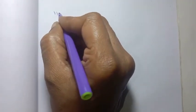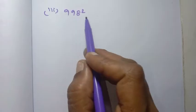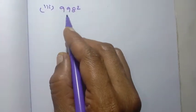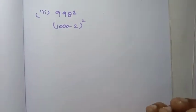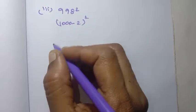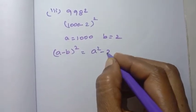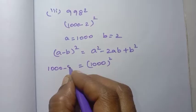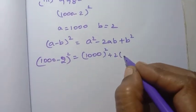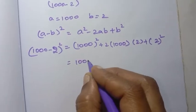Next, the third sum. The question is 998 square. Now 998 can be written as 1000 minus 2. So we have 1000 minus 2, the whole square. This is the A minus B form, where A equals 1000 and B equals 2. The formula is A minus B whole square equals A square minus 2AB plus B square.